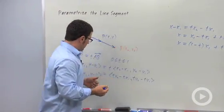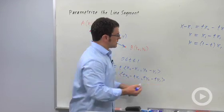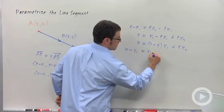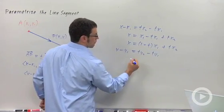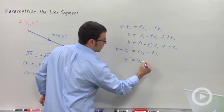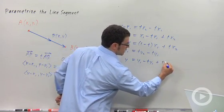Now the same thing is going to happen for y. y minus y1 equals T y sub 2 minus T y sub 1. T y sub 2 minus T y sub 1. Again, I'll move the y1 term in front and I'll add y1 to both sides. I'll get y1 minus T y1 plus T y2.